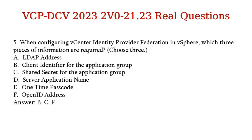Question 5. When configuring vCenter Identity Provider Federation in vSphere, which three pieces of information are required? (Choose three.) A. LDAP Address. B. Client Identifier for the Application Group. C. Shared Secret for the Application Group. D. Server Application Name. E. One-time Passcode. F. OpenID Address. Answer: B, C, F.